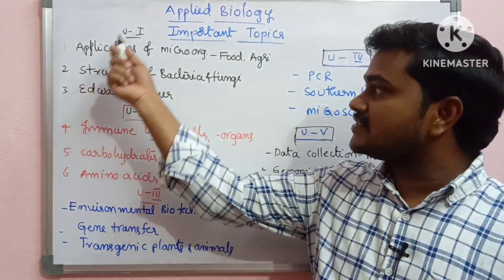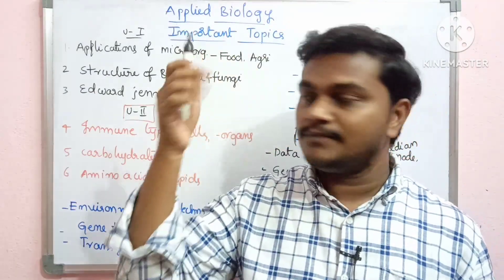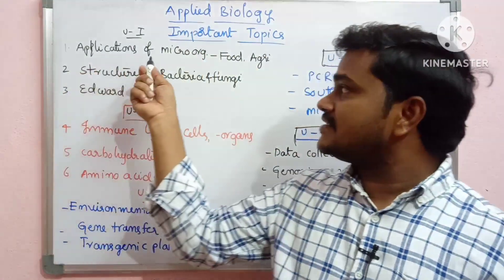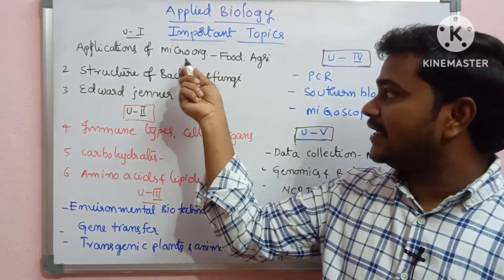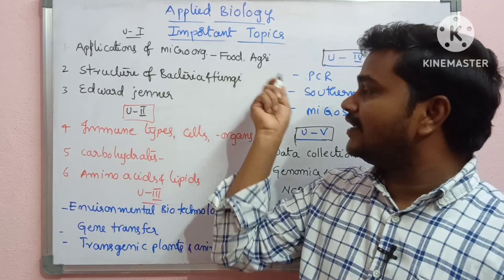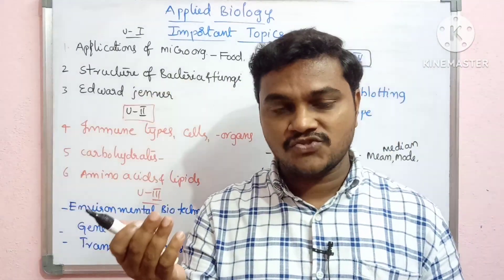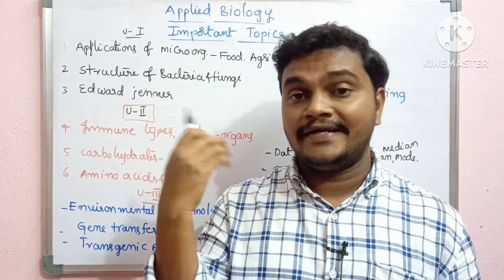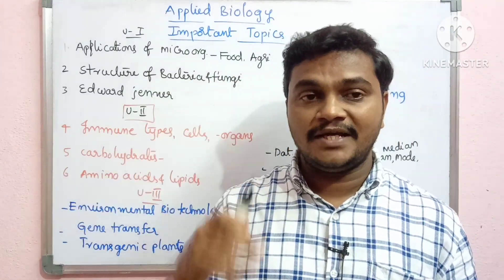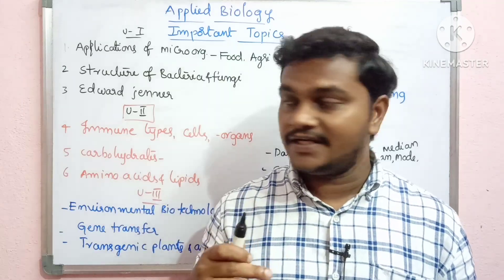So the first two units are microbials. Applications are micro-organisms — in food and agriculture. In food and agriculture, there are micro-organisms.